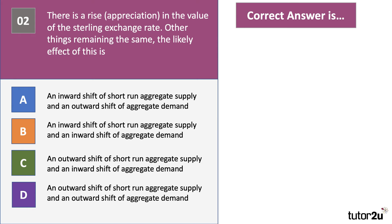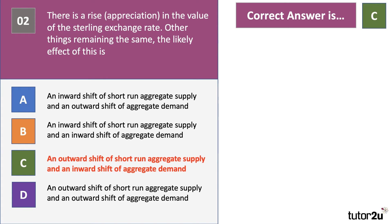The pound has gone up in value — sterling has appreciated against the euro and perhaps the US dollar. A strong pound makes imports cheaper and exports dearer. Cheaper imports mean an outward shift of aggregate supply, but as exports become less price competitive, one might expect a fall in exports, causing an inward shift of aggregate demand. The answer to question two is C.